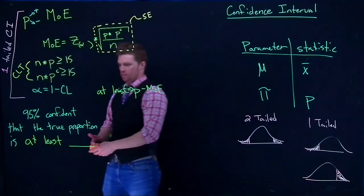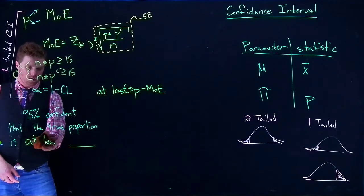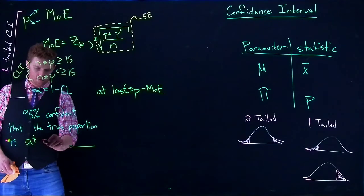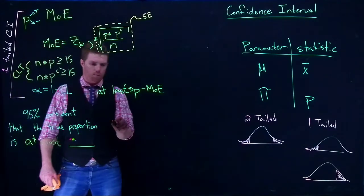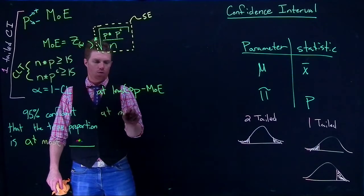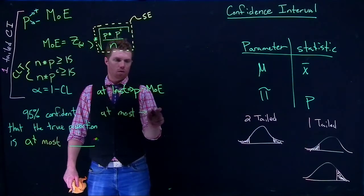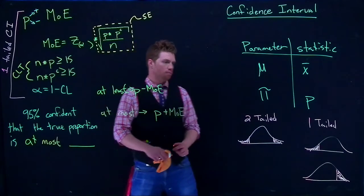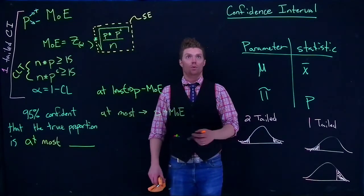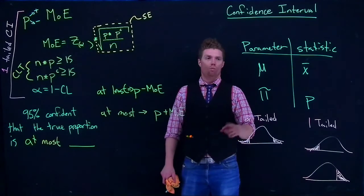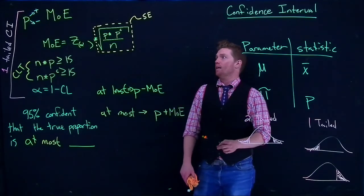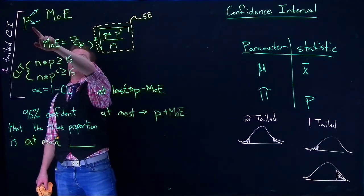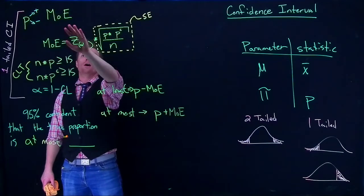And if we say instead of at least is at most, if that's what we're trying to say in our confidence interval statement, at most goes to P plus the margin of error. So when we're doing the confidence interval, we really have one job to figure out. We need to figure out what our sample proportion is and we need to figure out what our margin of error is.